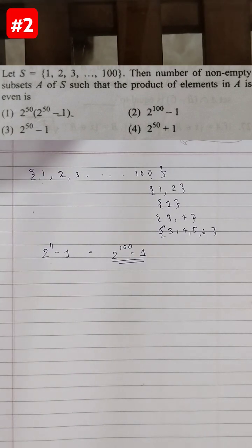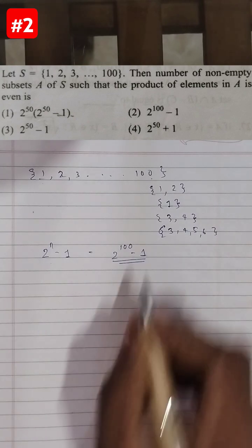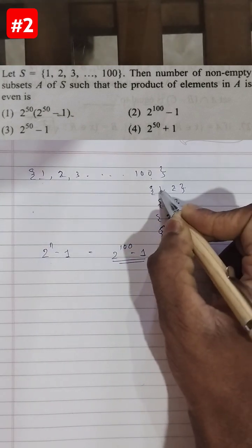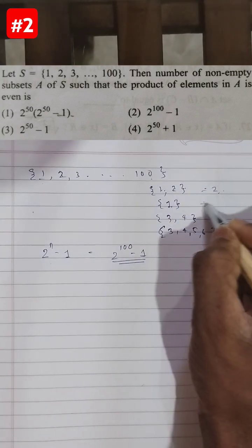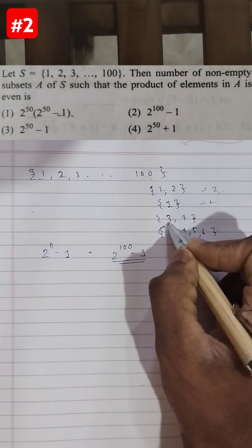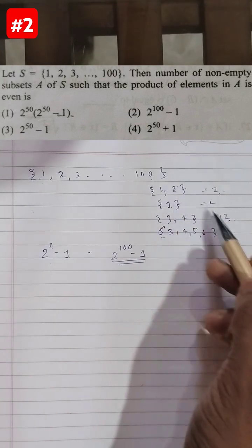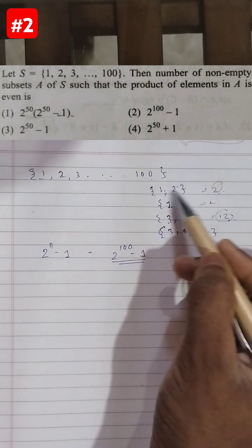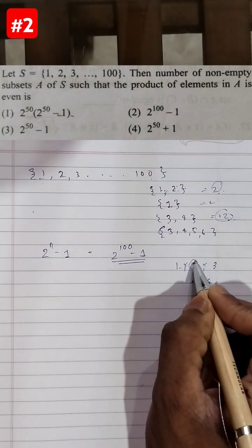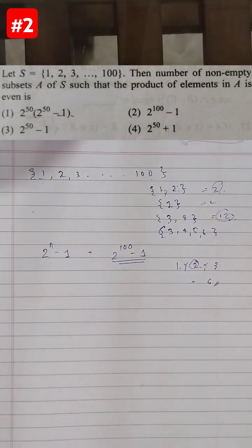The question wants us to find the number of subsets in which the product of the elements is an even number. For example, {1, 2} gives 1 × 2 = 2, which is even. {1} gives 1, which is odd. {4, 3} gives 12, which is even. So we want to find how many subsets give an even number when multiplying the elements. If there is any even number in a multiplication, then the product becomes even.